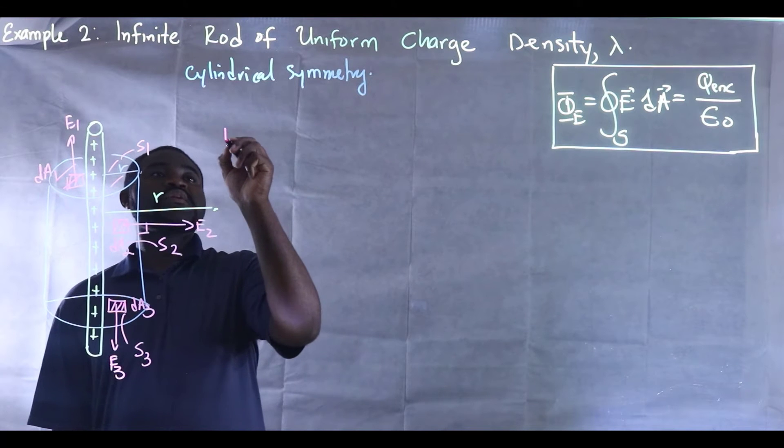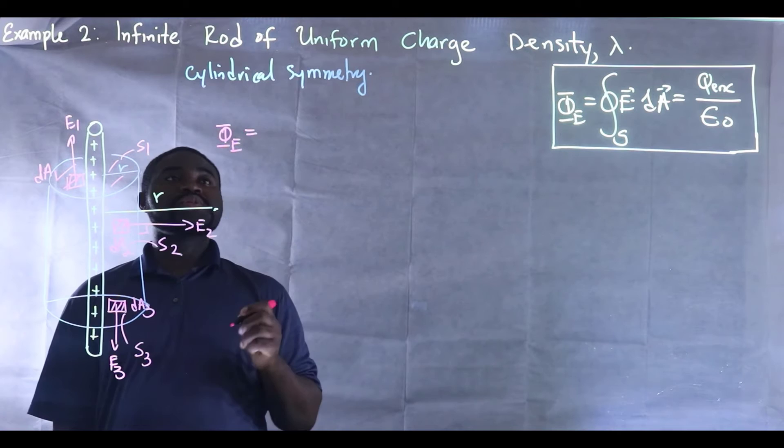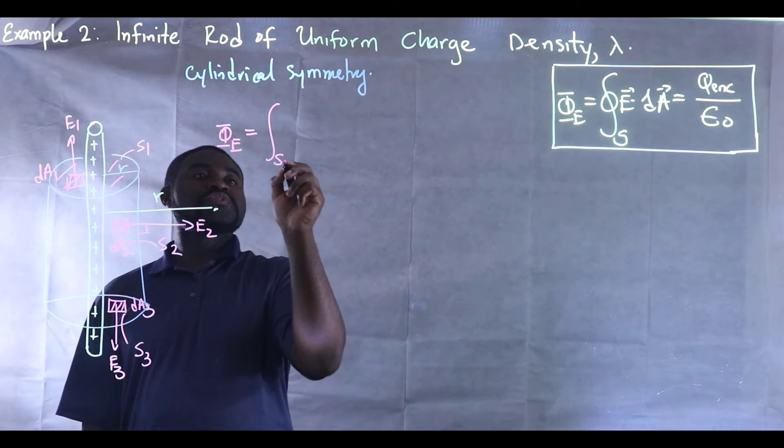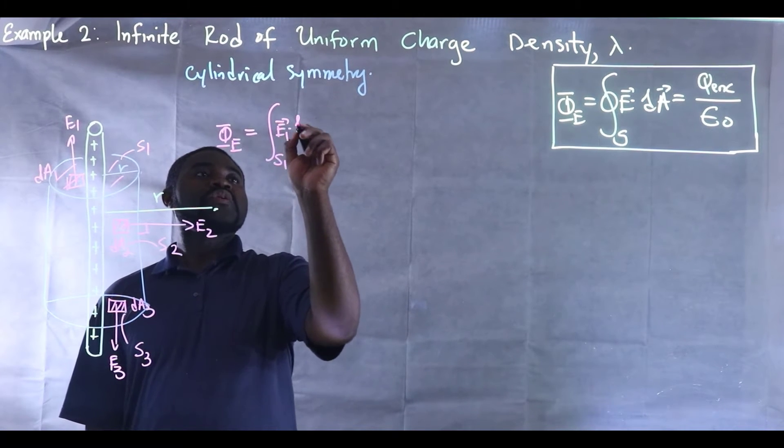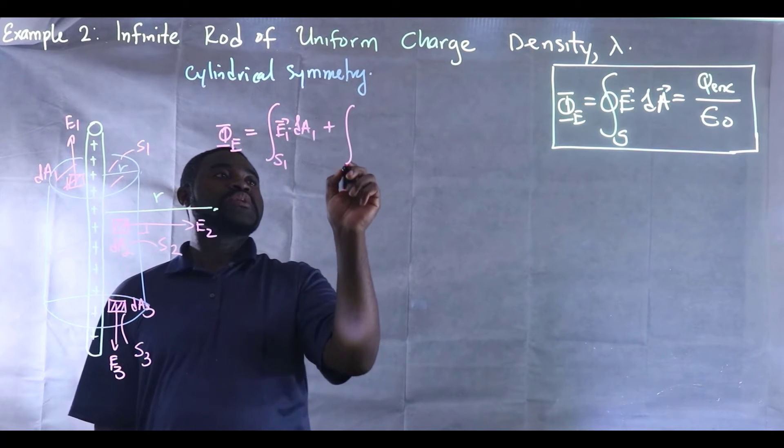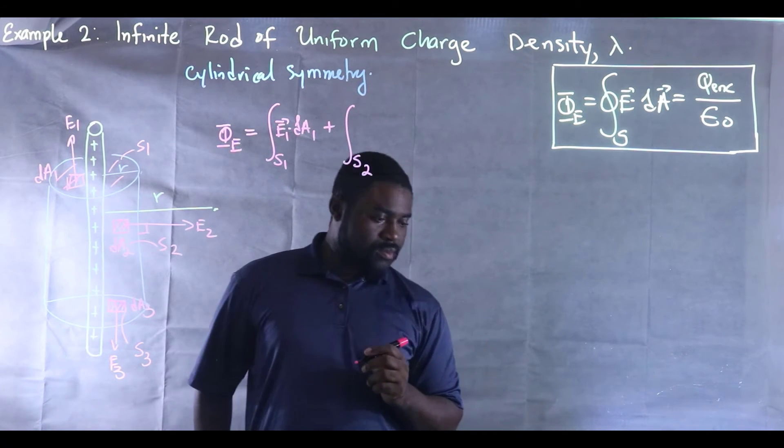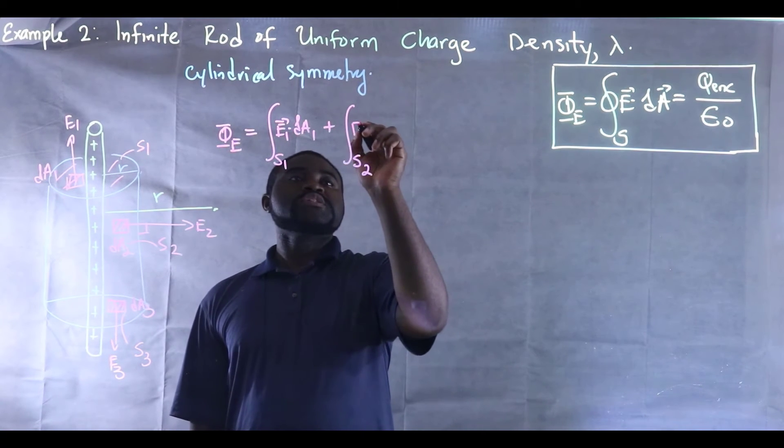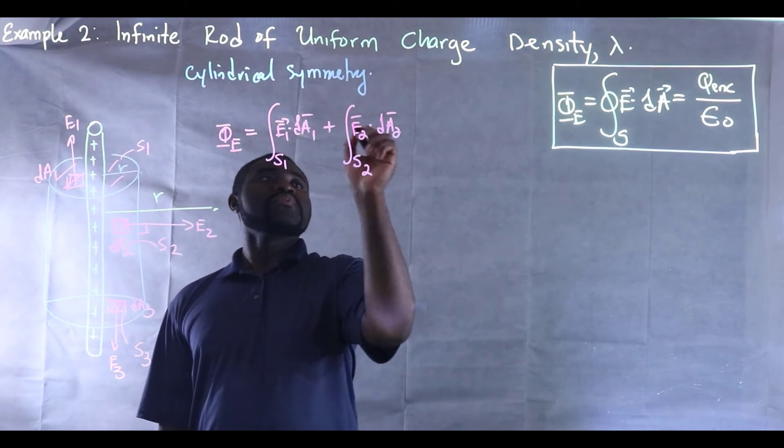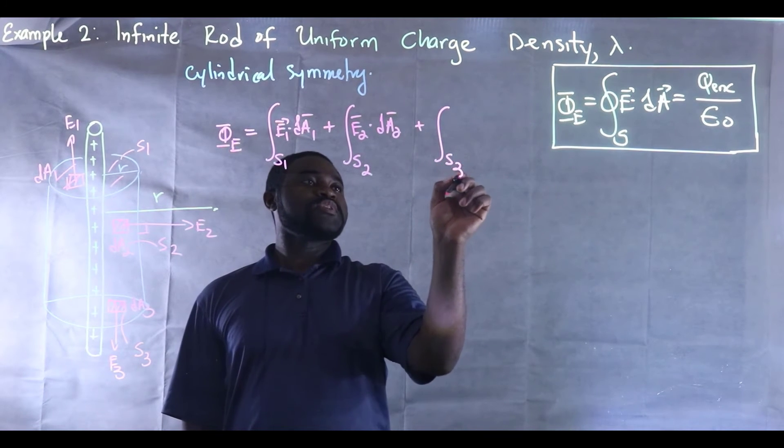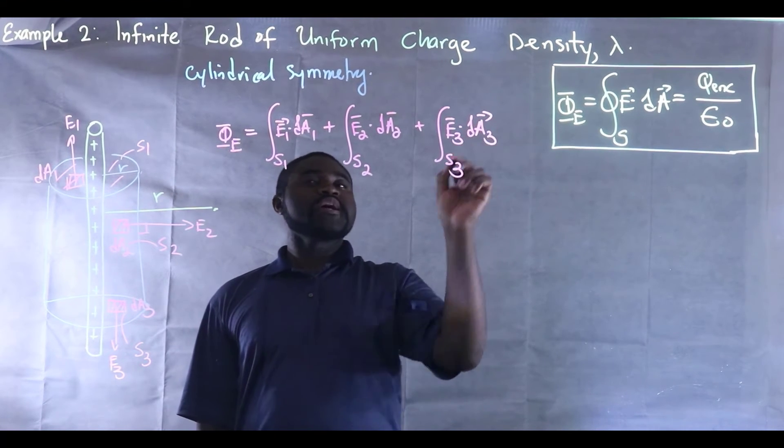So we know that the total electric flux will be the flux through S1 plus the flux through S2 plus the flux through S3. So we assume this is E2 dot dA2 plus the electric flux through surface 3, which is E3 multiplied by A3.